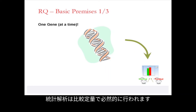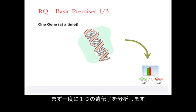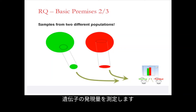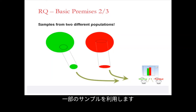Statistical analysis is a natural aspect of relative quantification. Before we proceed, we need to define the basic premises of relative quantification. First, we analyze one gene at a time. We measure expression of this gene in two different groups sampled from two different populations, such as an untreated normal control group and a treated group. It is often not economical or practically possible to sample the whole population from each group, and that is the reason we obtain samples.